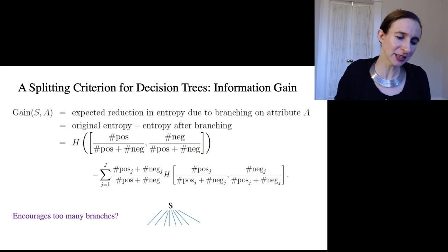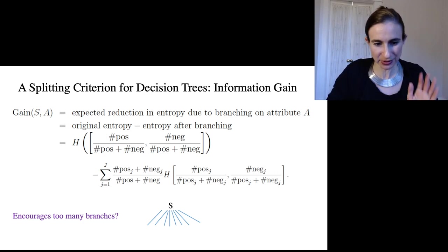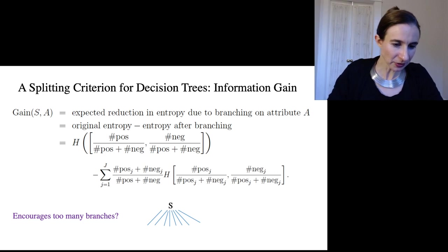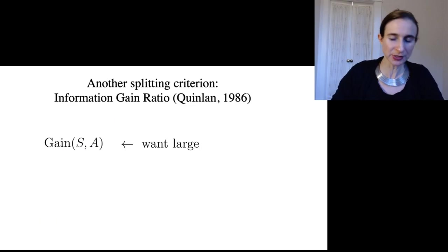Since it encourages too many branches, we might want to find a way to mitigate that and tell it to only create a branch if it's actually going to really benefit the information gain. So there's a way to reduce the amount of branching, and that's called the information gain ratio.